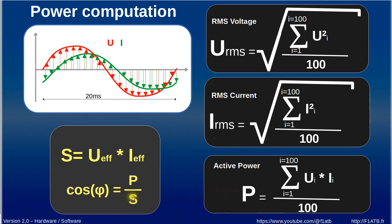In parallel we compute other figures like for example the cosine phi which is the ratio between P and S. S is a product, it's a simple product of the RMS value of the voltage and the RMS value of the current.